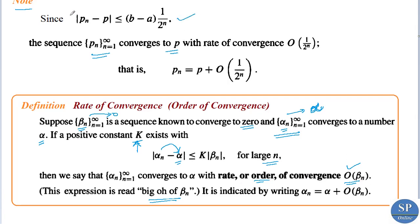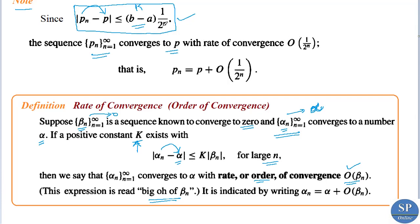From the above theorem, |pn - p| ≤ (b - a)·(1/2^n). So the sequence pn converges to p with rate of convergence O(1/2^n), where our constant k is (b - a). Thus the sequence of approximate root values converges to the actual root p with order of convergence O(1/2^n), written pn = p + O(1/2^n). Note that Theorem 2.1 gives only a bound for the approximation error.